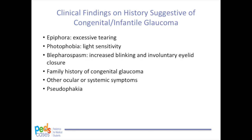Findings on history that are suggestive of glaucoma include epiphora, which is excessive tearing; photophobia, or light sensitivity; blepharospasm, which is increased blinking and involuntary eye closure; a family history of congenital glaucoma; and pseudophakia, which is when an artificial lens is inside the eye rather than the natural lens.